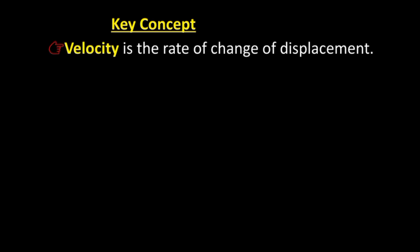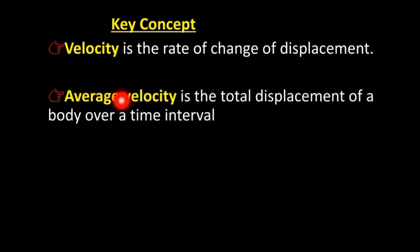Key concepts: Velocity is the rate of change of displacement. Average velocity is the total displacement of a body over a time interval.